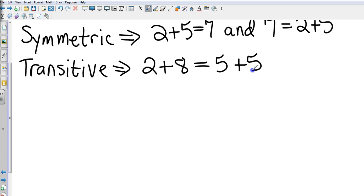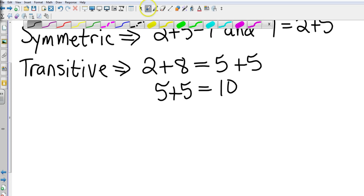So if I then went to five plus five equals ten, because these two are the same, then obviously these two will be the same. So my conclusion would be two plus eight equals ten. Now I know that looks very basic, but just showing you the different properties.